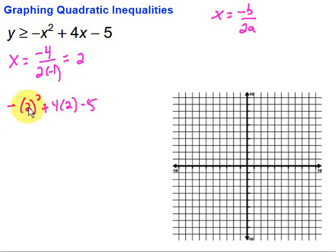plus 4 times 2 minus 5. So, 2 squared is 4. Make that negative. So, negative 4 plus 4 times 2 is 8 minus 5. Then, negative 4 plus 8 would be positive 4 minus 5 would be negative 1. So, my vertex is at 2, negative 1.